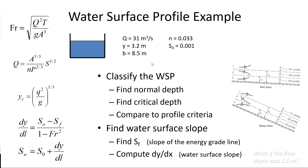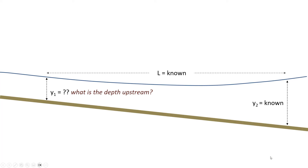That concludes the water surface profile example. For the rest of class, we'll transition into talking about a method where we can calculate a new depth at a different location. With gradually varying flow, we know at a point whether the water is getting deeper or shallower, but now how do we break that up into segments and calculate a new depth? We may know the depth at one location and want to find how deep the water is, say, 200 meters upstream.